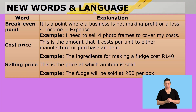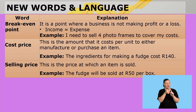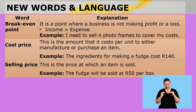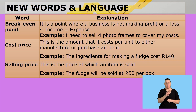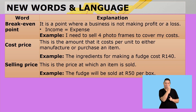Let's look at the new words and language. The first word: break-even point. This is a point where a business is not making a profit or a loss — your income will be the same as your expenses. For example, I need to sell four photo frames to cover my costs. Cost price is the amount that it costs per unit to either manufacture or purchase an item.